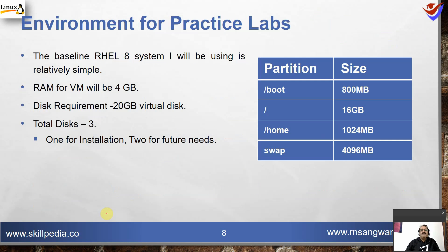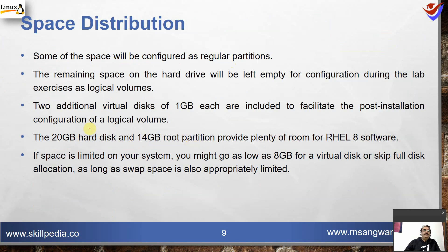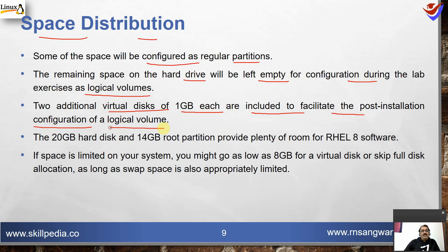The baseline RHEL 8 system for our practice environment is relatively simple: RAM for the virtual machine will be 4 GB, disk requirement will be 20 GB virtual disk, and the total number of disks will be three — one for the installation and two for future needs for LVM setup. Some space will be configured as regular partitions; the remaining space will be left empty for configuring during lab exercises as logical volumes. Two additional virtual disks of 1 GB each are included to facilitate post-installation configuration of logical volumes.